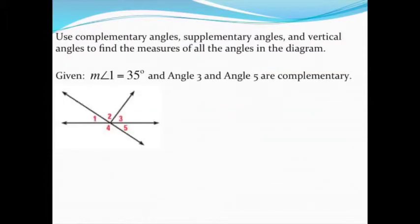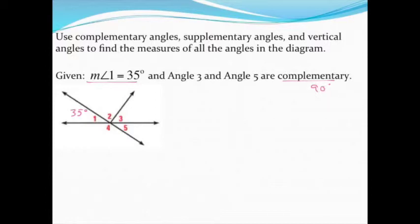Now let's put it all together — vertical angles, supplementary angles, linear pairs, and complementary angles — to find all the angles in this diagram. Some values are given: angle one is 35 degrees. We're also told that angles three and five are complementary, meaning they add up to 90 degrees. I'll mark a right angle symbol at that spot to indicate those two angles together make 90 degrees.